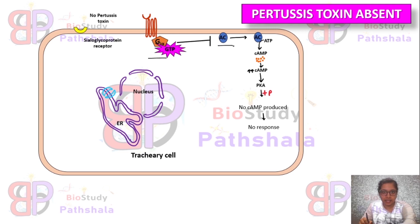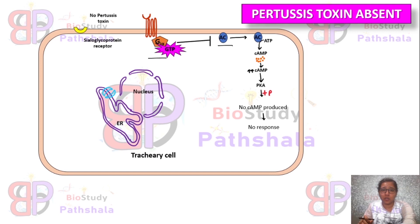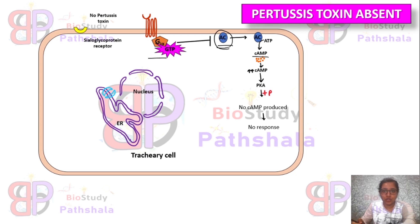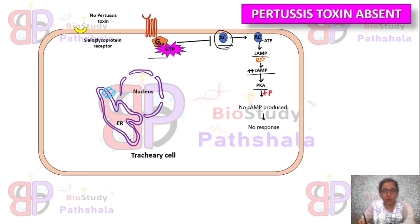This GTP-bound state of the Gi alpha subunit causes inhibition of the effector, adenylate cyclase. The inhibition of adenylate cyclase results in no formation of cyclic AMP from ATP, so there will be no accumulation of cyclic AMP in the tracheal cell, and protein kinase A cannot be activated due to low or no cyclic AMP.